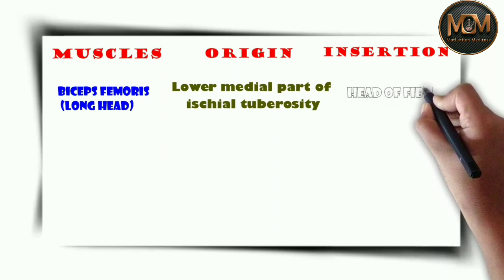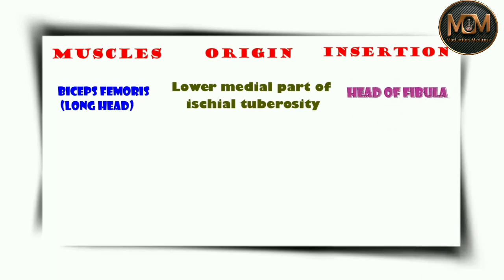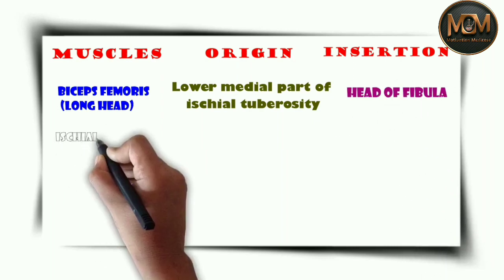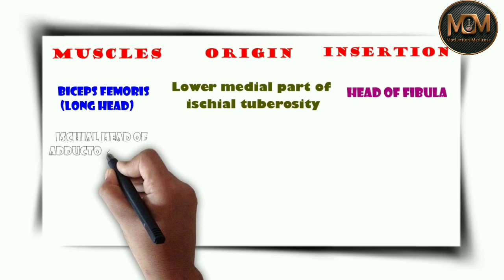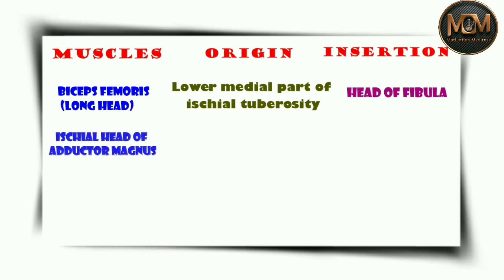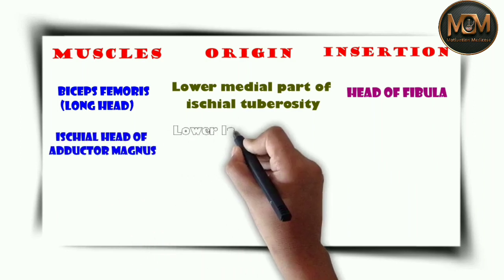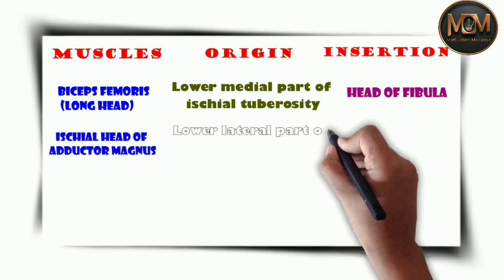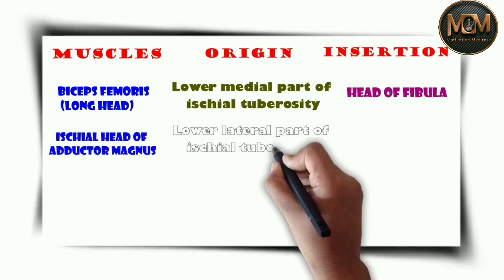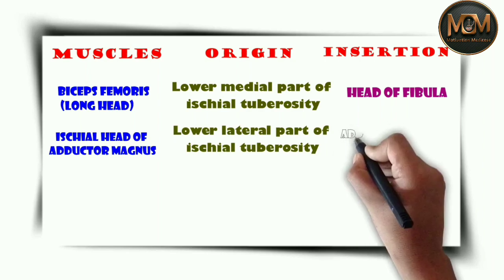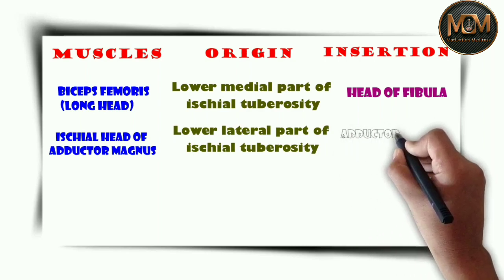For the ischial head of the adductor magnus, the origin is the lower lateral part of the ischial tuberosity, and it is inserted into the adductor tubercle. The next muscle is the semitendinosus.